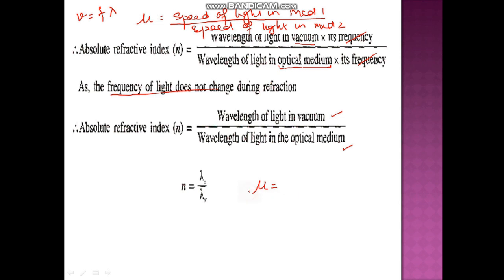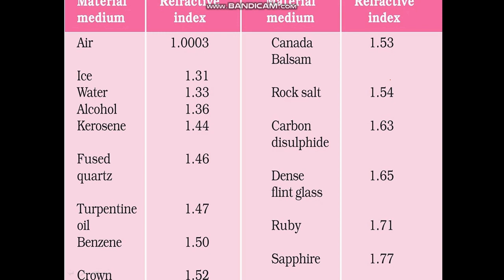So if light is travelling from air to glass, the refractive index will be the wavelength of light in air upon the wavelength of light in glass — yet another way to calculate refractive index. This table shows the refractive index of different materials: air is 1.003, water is 1.33, rock salt is 1.54, and carbon disulfide is 1.63. You need to learn one or two of them.